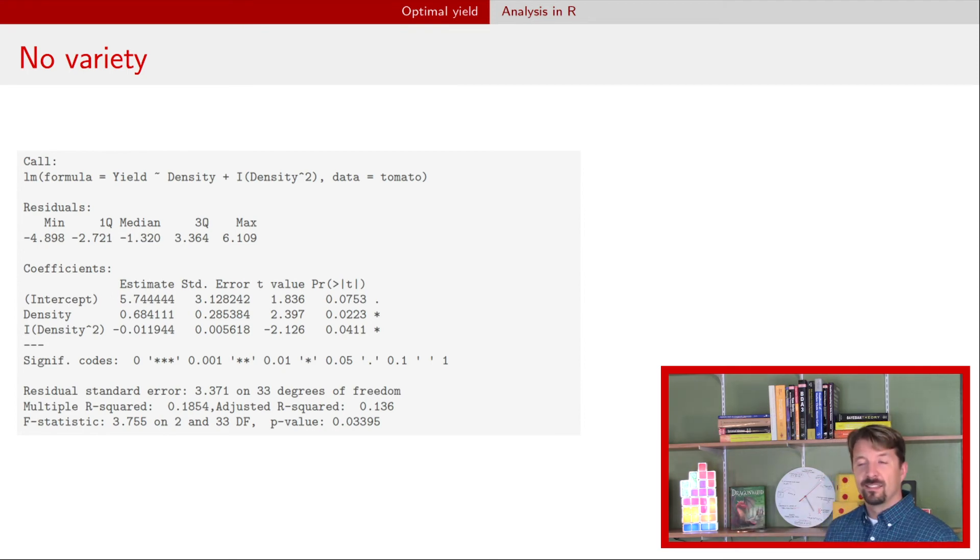So you take negative β₁ divided by 2β₂ and you'll find out that that term actually tends to be positive because the negative coefficient for β₂ cancels with the negative sign in that calculation and you'll get a density that should be somewhere in the range or close to 30.